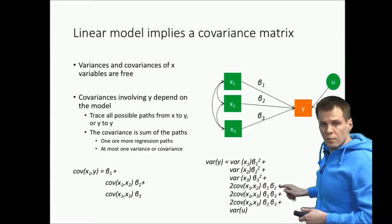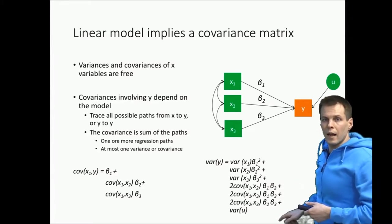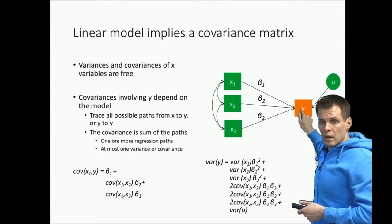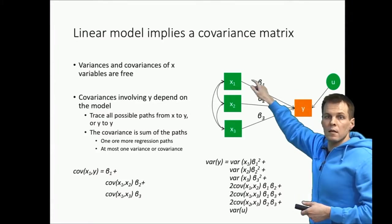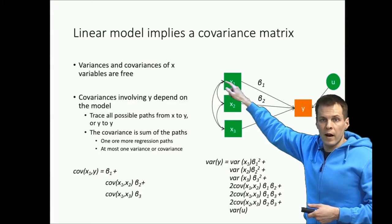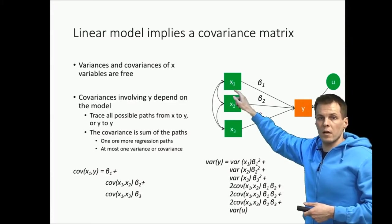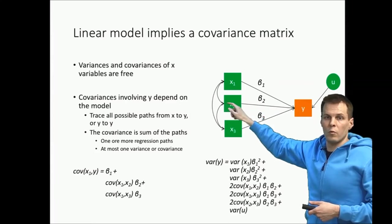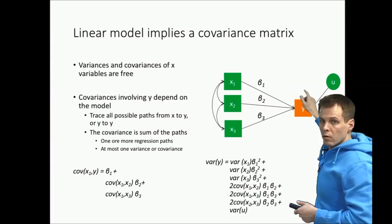So why that's a useful rule is because it allows us to see that the variance of y is a sum of all these different sources of variation. So we get variation due to x, variation due to x, covariance between x1 and x2, we get variation due to the error term.